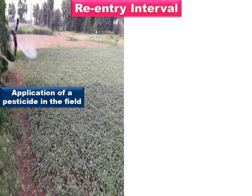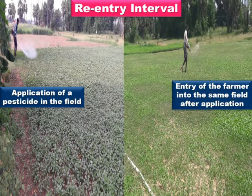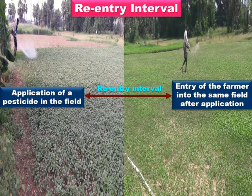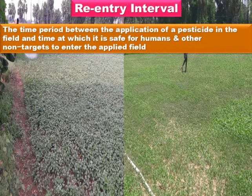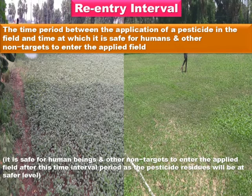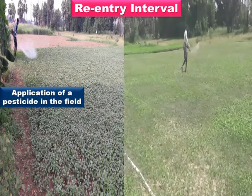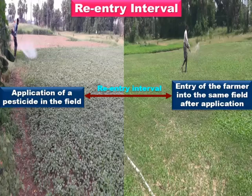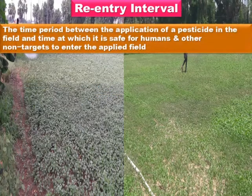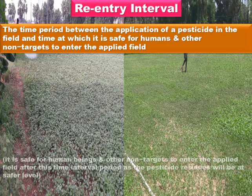The left side photo is the application of a pesticide in the field, and the right side photo is the entry of the farmer into the same field after application. The gap between these two activities is known as the re-entry interval — that is, the time period between the application of a pesticide in the field and the time at which it is safe to enter the applied field for human beings and other non-target animals such as cattle. During this interval, the applied pesticide residue levels on the treated plant surface will come down to a level that is safer to human beings and other non-target organisms.